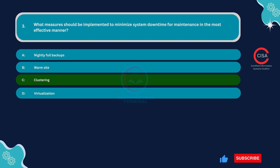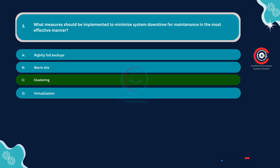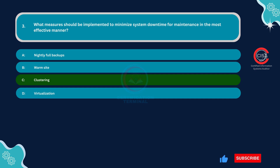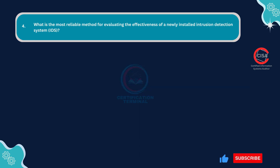Clustering involves grouping multiple servers together to act as a single system, providing redundancy and failover capabilities. In the event of a hardware failure or maintenance activity on one server, the workload can automatically be shifted to another server in the cluster without interrupting service, thus minimizing downtime. With redundancy built into the cluster, maintenance tasks can be performed on one node while the others continue to handle user requests. Clustering also provides fault tolerance by detecting and recovering from failures automatically.